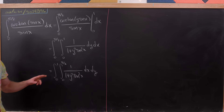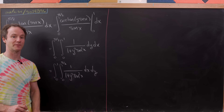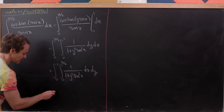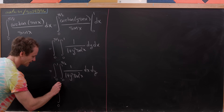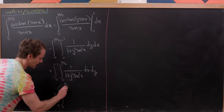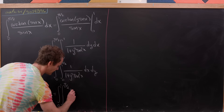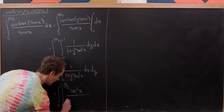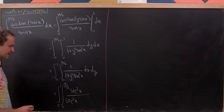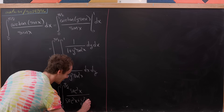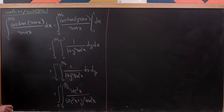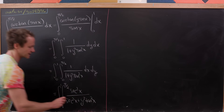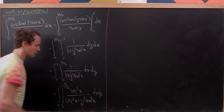Next I'll multiply the numerator as well as the denominator by secant squared — in other words, 1 over cosine squared. Multiplying by sec²x over sec²x gives a sec²x in the numerator. In the denominator, I get sec²x plus y² tan²x, because sin²x over cos²x is tan²x. So we have dx dy with that structure.